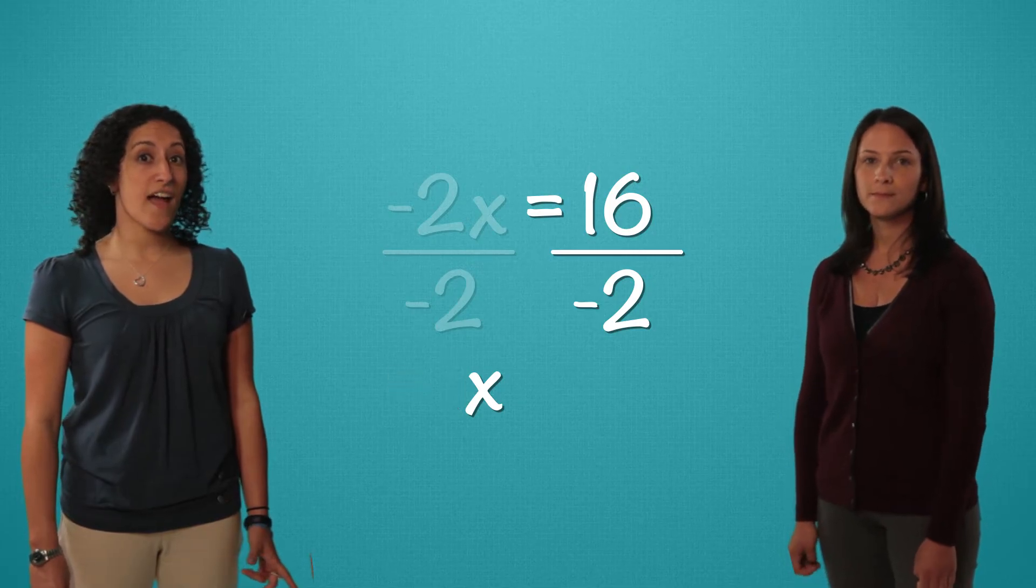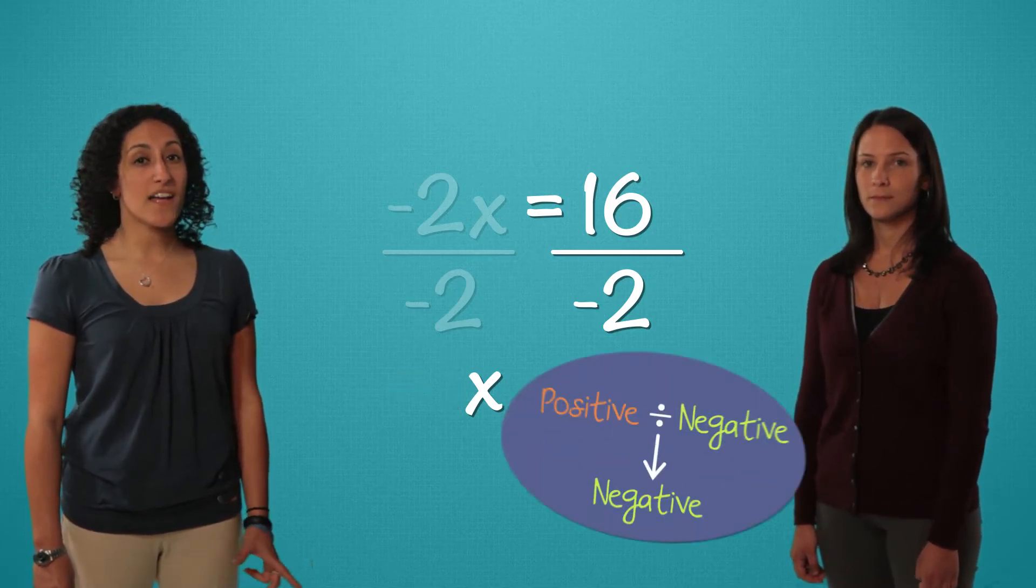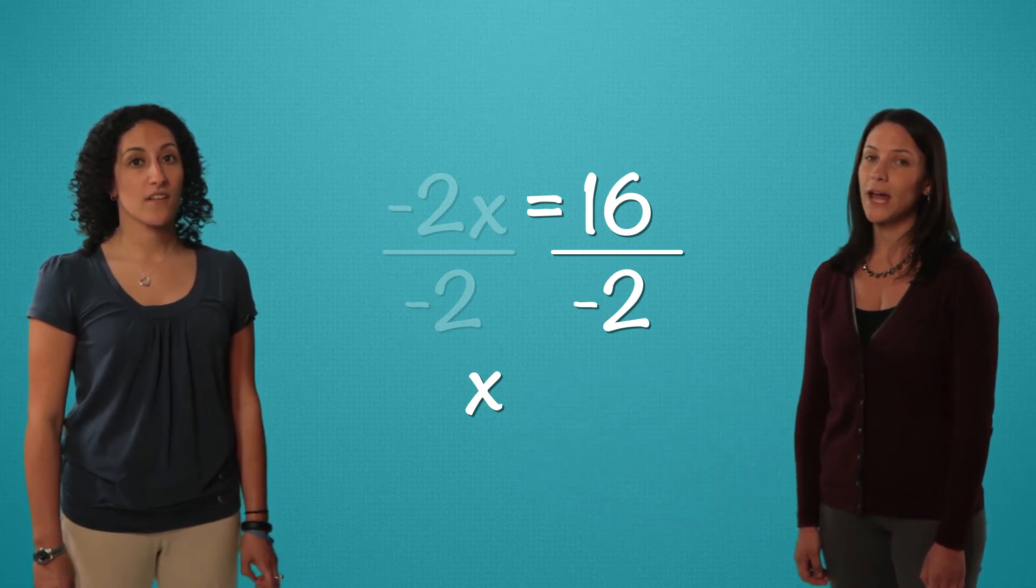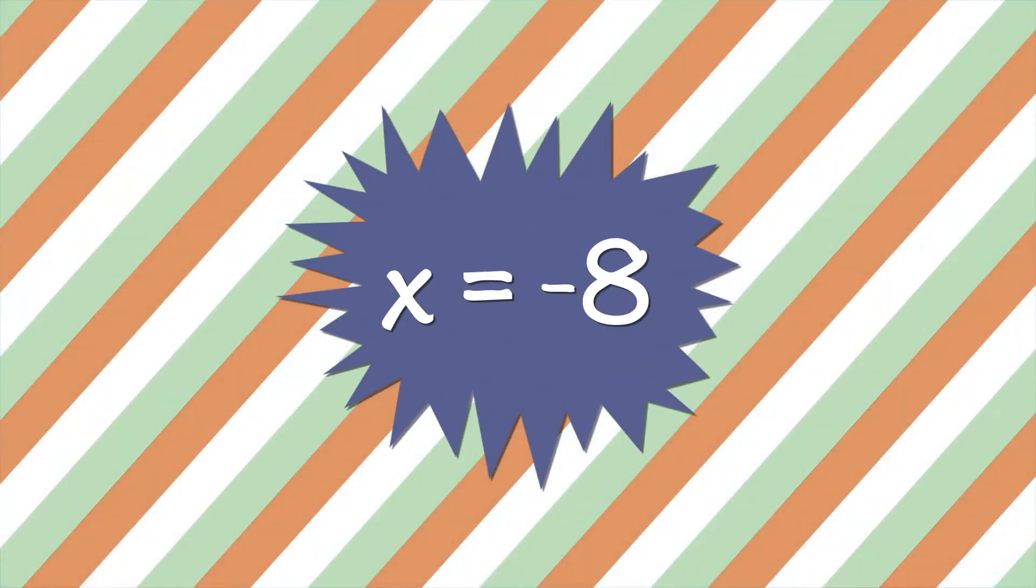On the other side, we have 16 divided by negative 2. A positive divided by a negative makes a negative. So 16 divided by negative 2 equals negative 8. X equals negative 8.